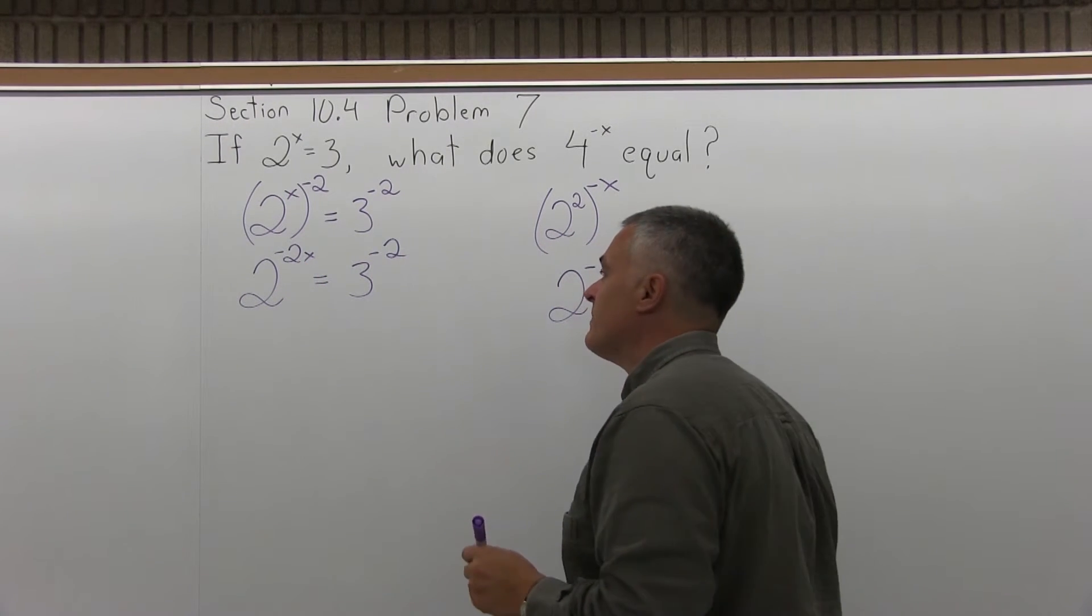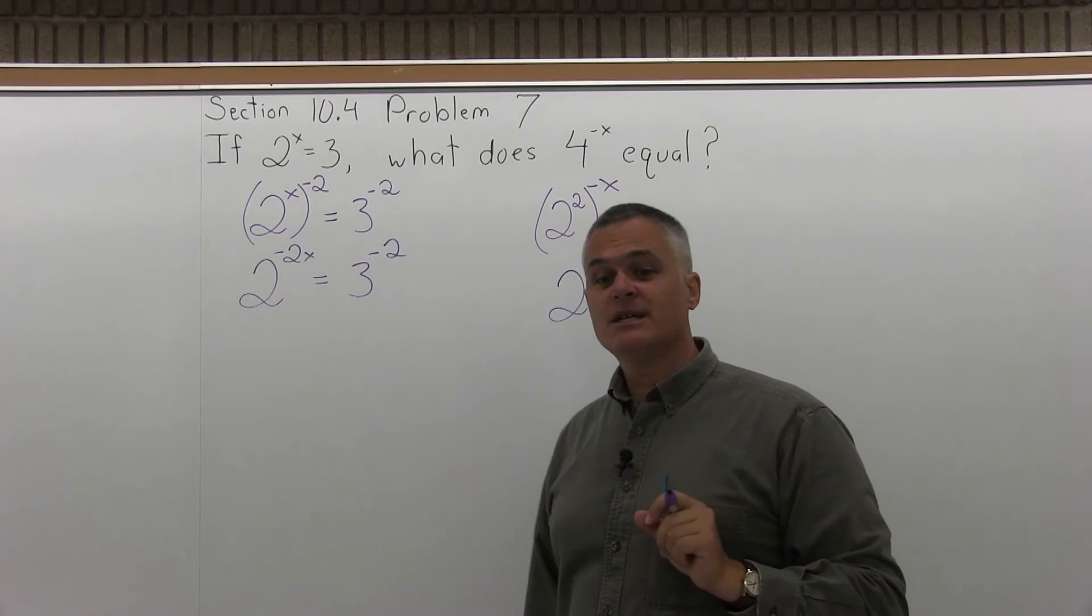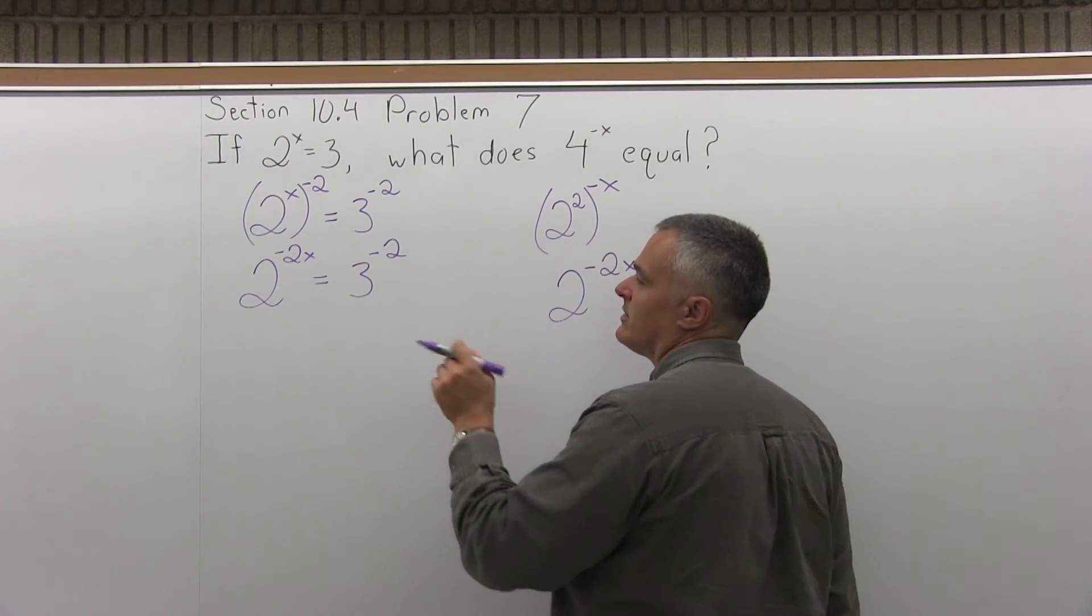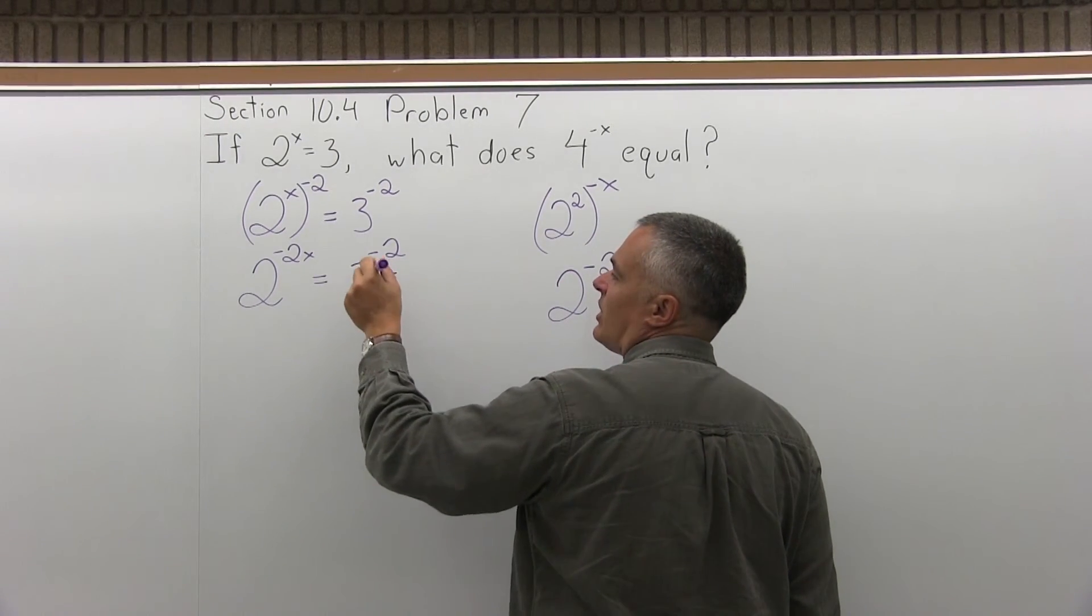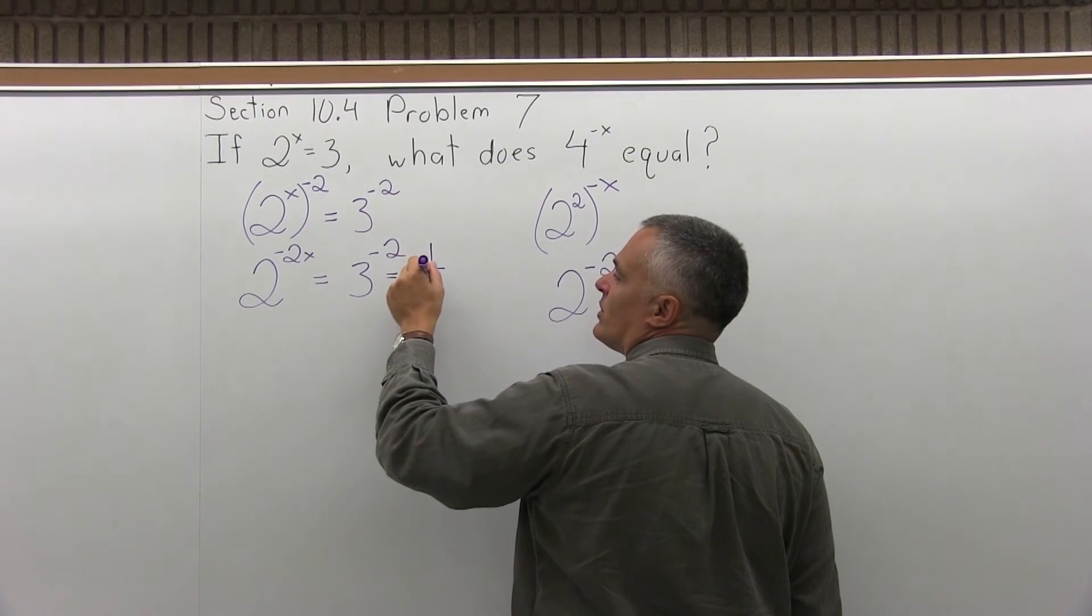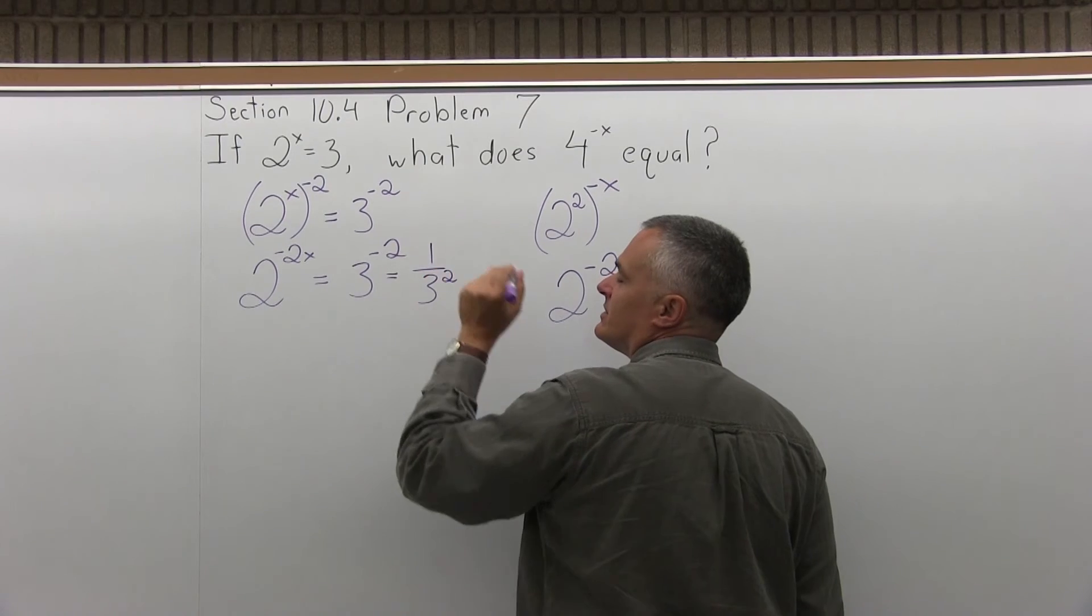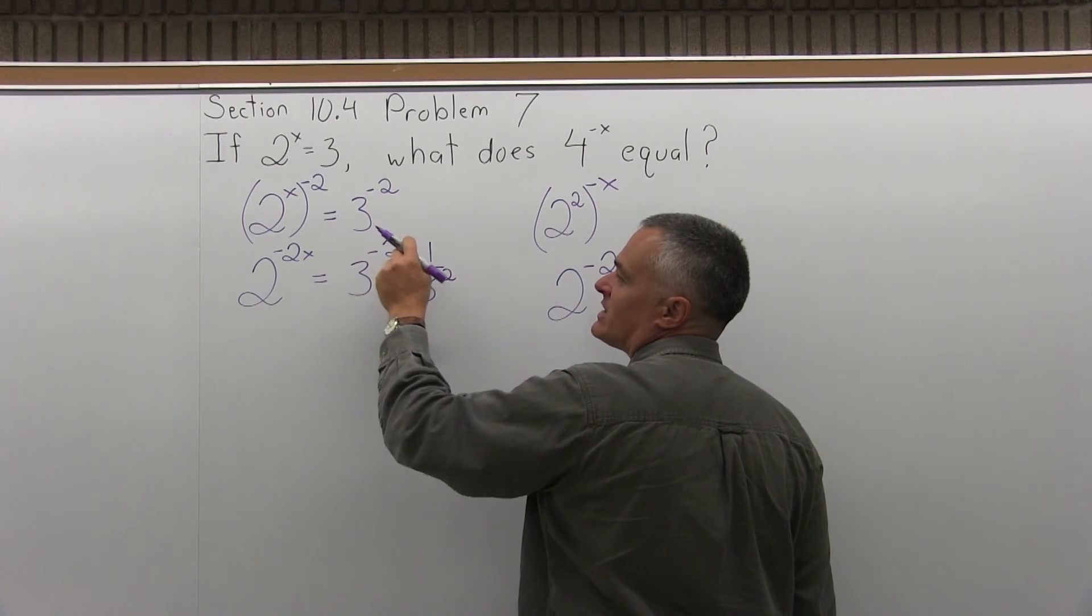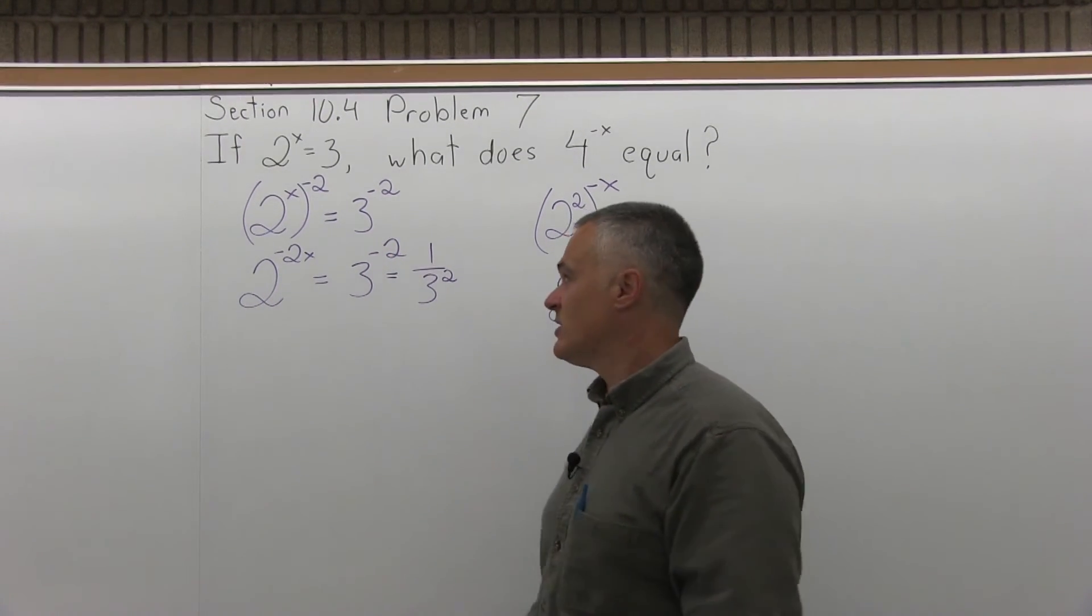The 3 to the negative 2, I can clean that up a little bit. That is the answer, but let's write it a little nicer. First of all, 3 to the negative 2 is 1 over 3 to the positive 2. Because that negative exponent doesn't really mean a positive or negative value.